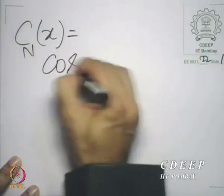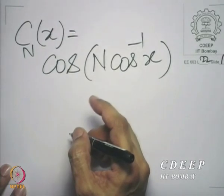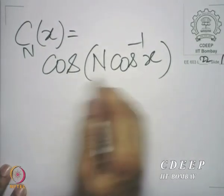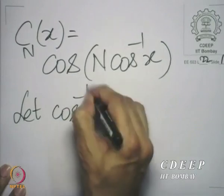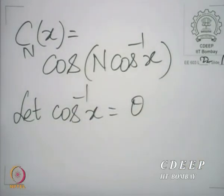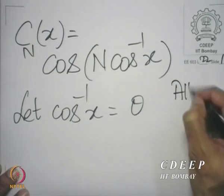Let us define the function Cn(x), which is cos of n times cos⁻¹(x). Interestingly, we will show that it can also be written in terms of the hyperbolic cosine. Let cos⁻¹(x) be equal to theta. We are now not restricting ourselves to real x at all, although we will later take the special cases of real x in different regions — we are allowing x to be complex.